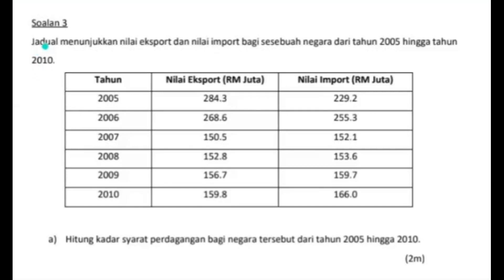Ini adalah soalan kuantitatif tiga. Jadual menunjukkan nilai ekspor dan nilai import bagi sebuah negara dari tahun 2005 hingga tahun 2010. Kita cuba tengok jadual yang telah disediakan. Ada tahun dan dekat sini dia sudah bagi nilai ekspor RM juta, begitu juga dengan nilai import RM juta.